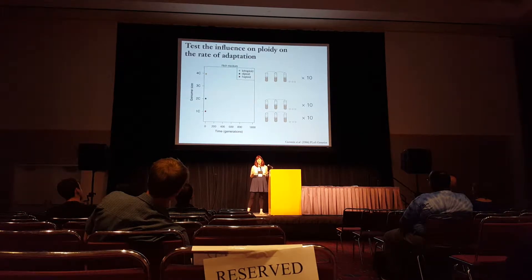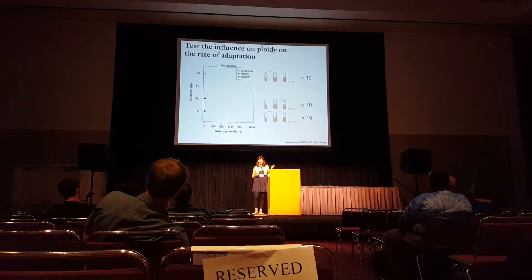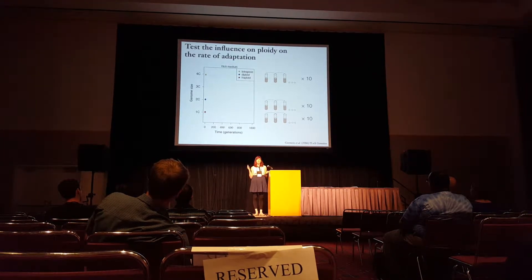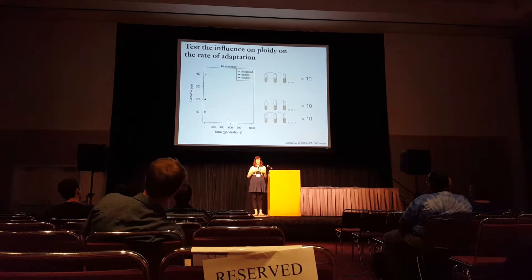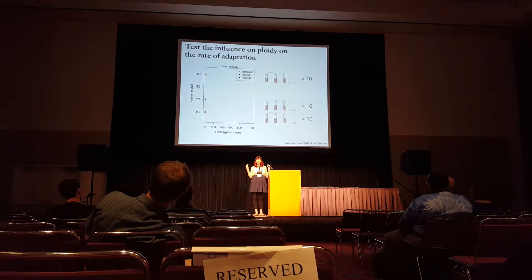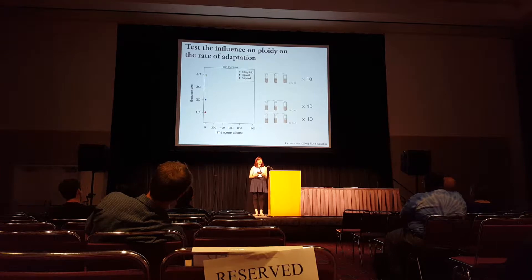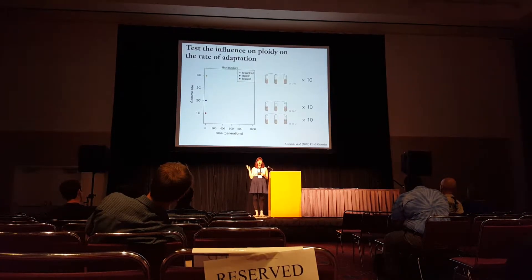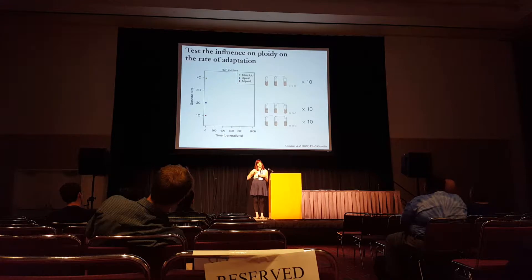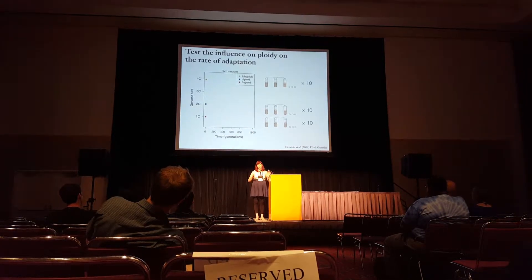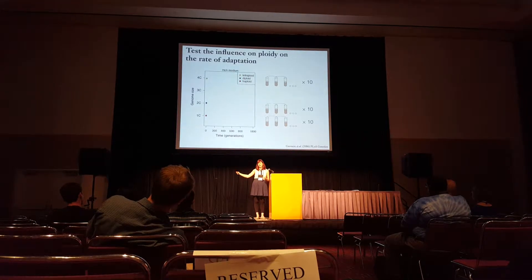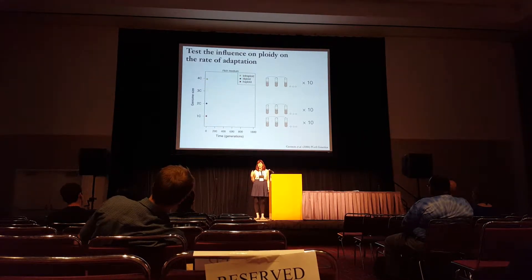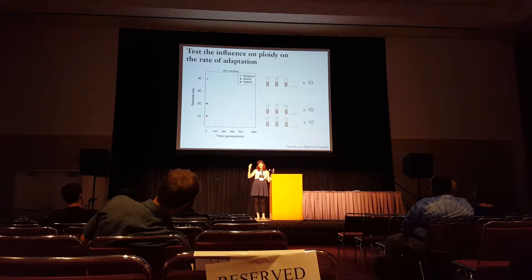We set out what we thought was a fairly simple experiment to take haploid, diploid, and tetraploid yeast. We evolved them in a Lenski-style experimental setup, where you put a number of cells into a very defined media. You let the cells grow up for 24 hours until they use the majority of the resources. You come back the next day, you transfer a subset of the cells — usually about 1:100 dilution — and you do this again and again. We did this for almost 2,000 generations.